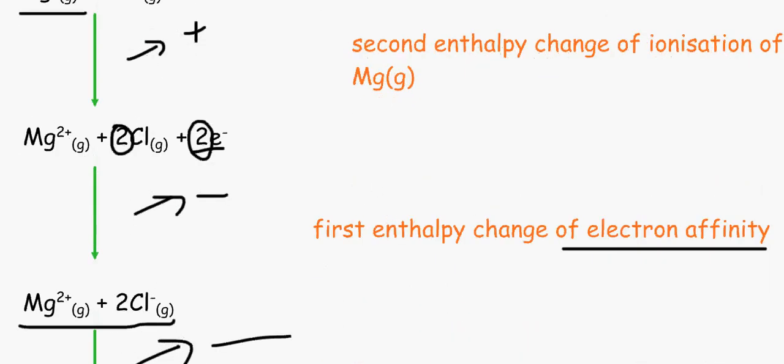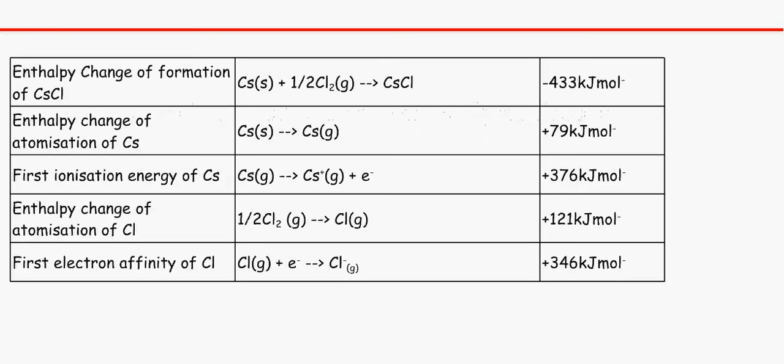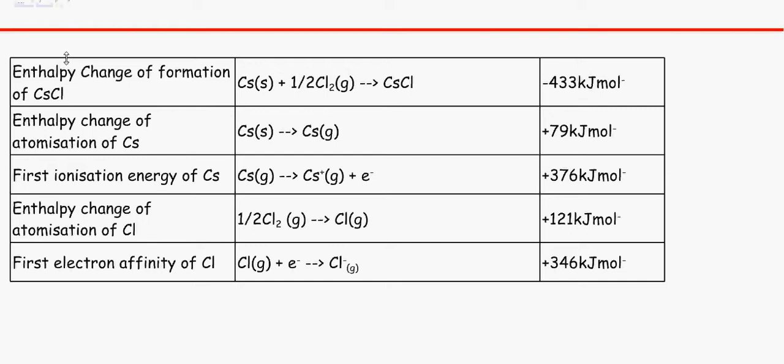We're going to portray that in a graph that looks like this. So we have got this experimental data over here all nicely laid out for you, this is also on page 170 of the book. So we've got enthalpy change of formation, atomisation, ionisation energy, atomisation, electron affinity.